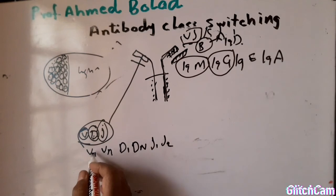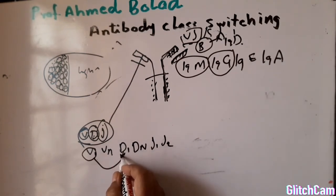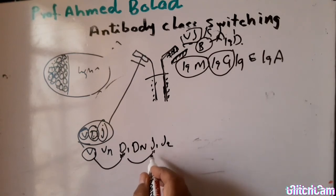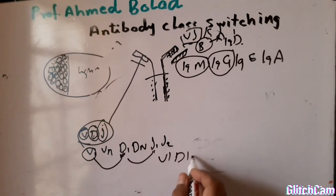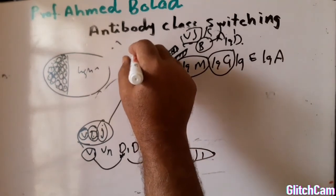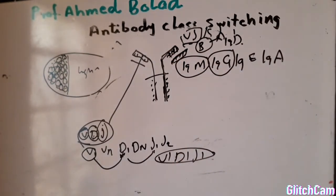For example, V1 may bind to D1 and J1. This V1-D1-J1 will form the variable region of the antibody. This increases antibody diversity. Why do we need to increase antibody diversity? Simply because of the genes that encode antibodies.